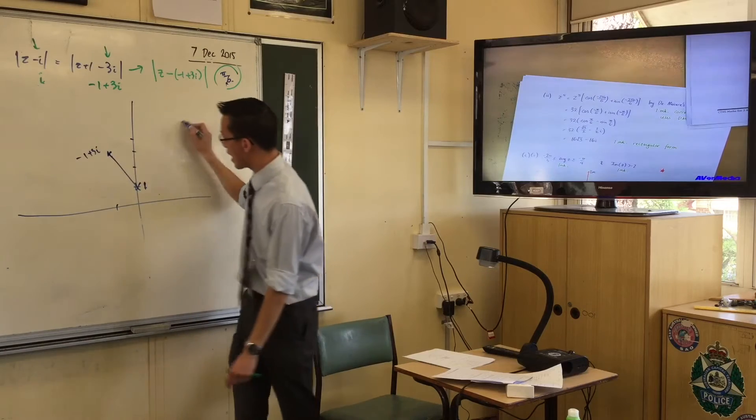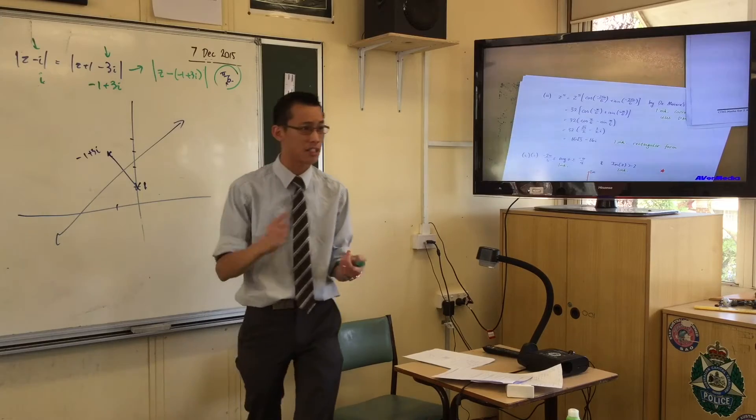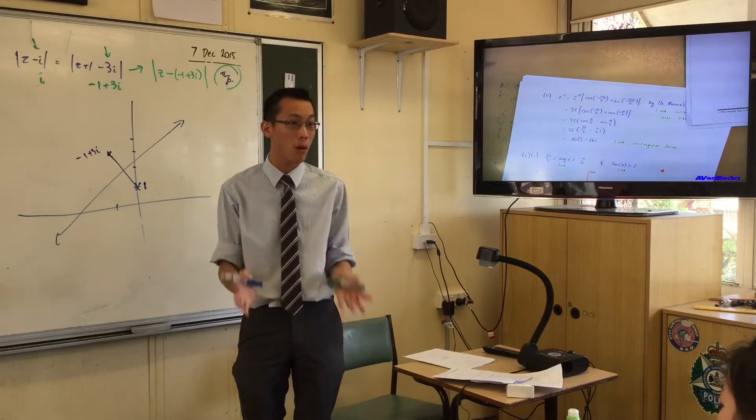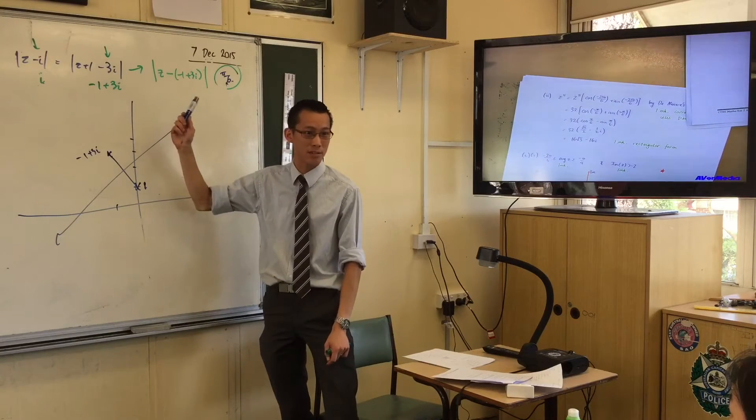You should know by now, that's just the perpendicular bisector. You should see that. You've been doing locus in 2-unit and extension 1 for a long time now. This is kind of 2-unit, just dressed up in 4-unit language.